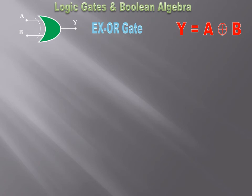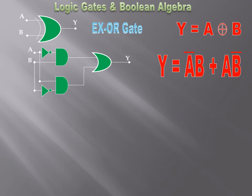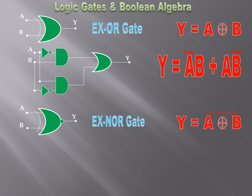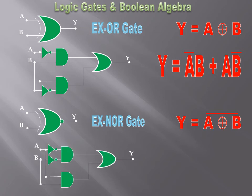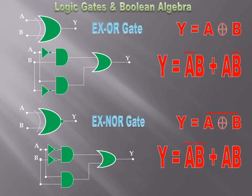The XOR circuit is constructed from basic gates, and the actual Boolean expression is Y = A·B' + A'·B. Similarly, the XNOR expression is Y = A·B + A'·B', meaning the output is high when both inputs are the same.